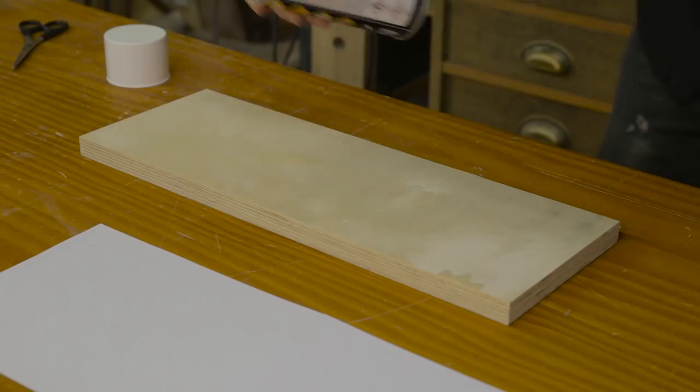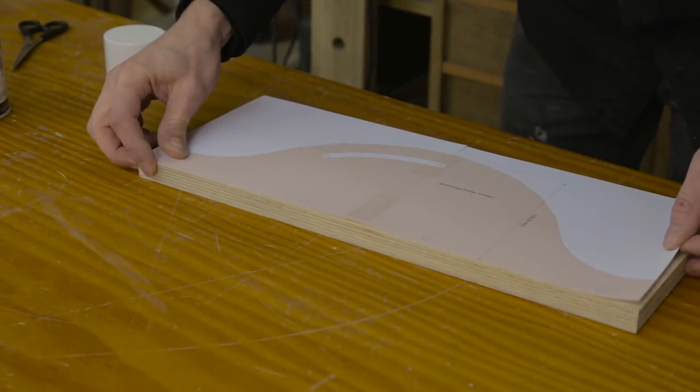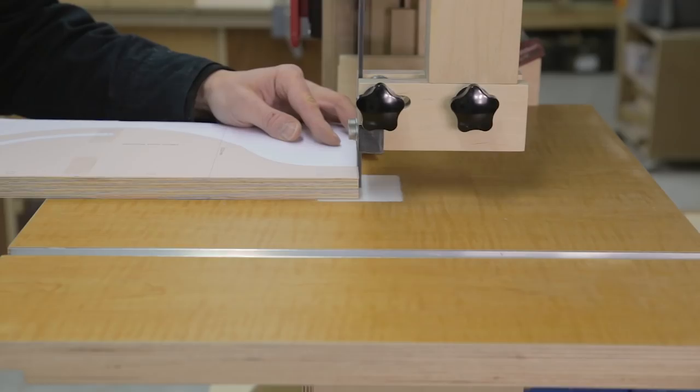This part will allow me to lock the table in place. After gluing the printable template onto the board, I cut it with the bandsaw itself.